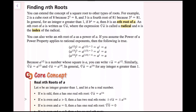You can also write an n-th root of a as a power of a. If you assume the power of a power property applies to rational exponents, then: 8 to the 1/2 power squared equals 8 to the 1; 8 to the 1/3 power cubed equals 8 to the 1; and 8 to the 1/4 power to the 4th power equals 8 to the 1. Because 8 to the 1/2 is a number whose square is a, the square root of a equals a to the 1/2 power. Similarly, the cube root of a equals a to the 1/3 power, and the 4th root of a equals a to the 1/4 power. In general, the n-th root of a equals a to the 1-over-n power for any integer n greater than 1.